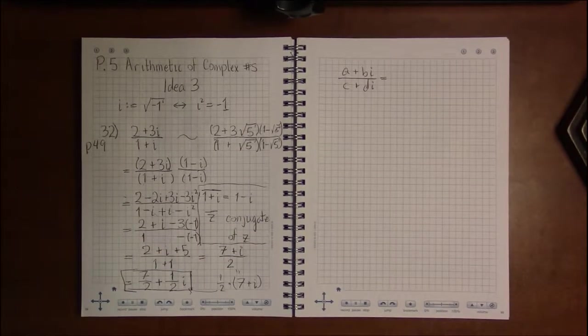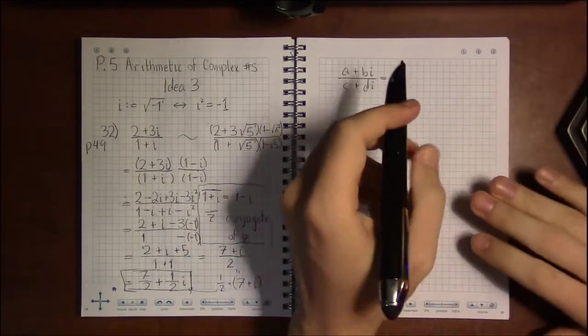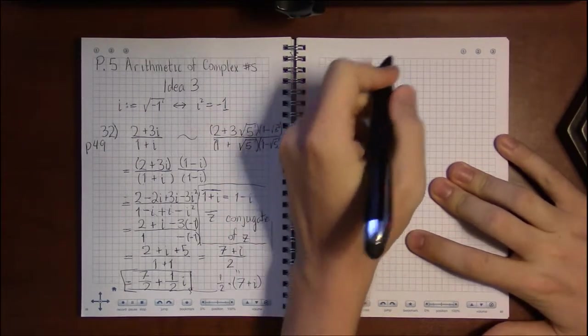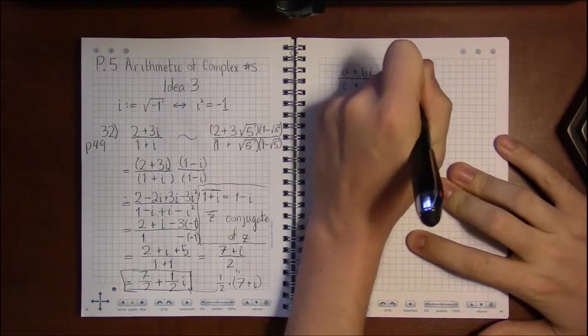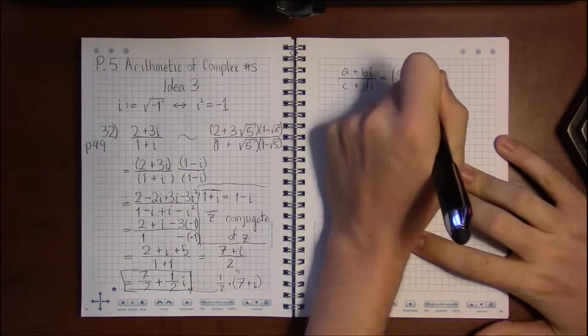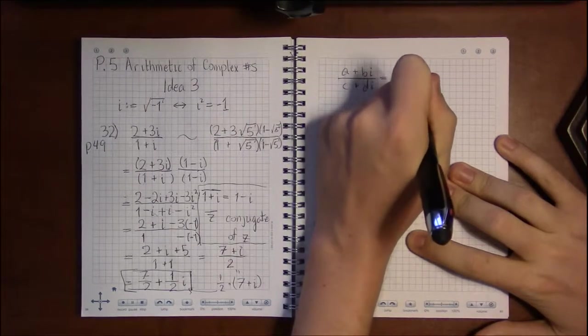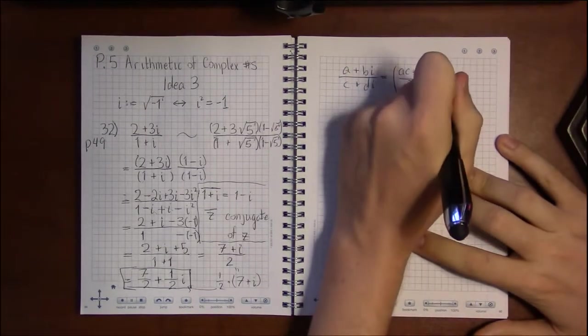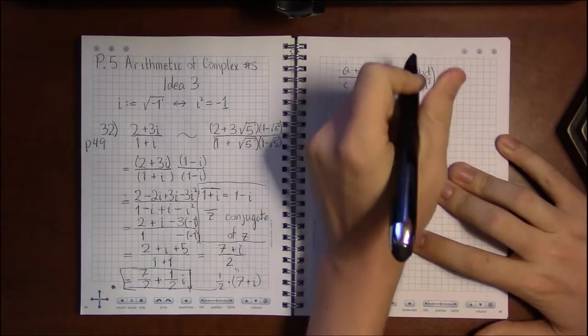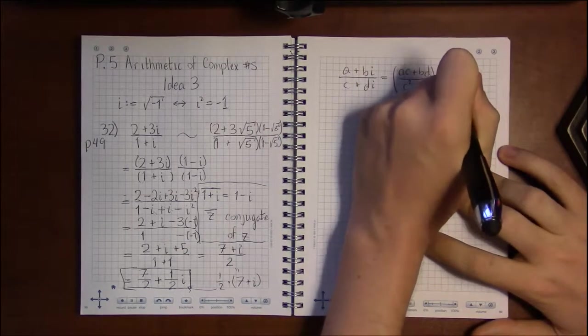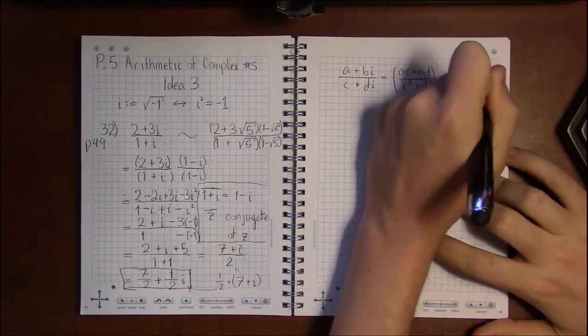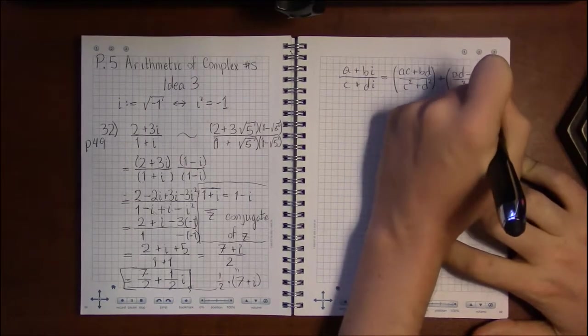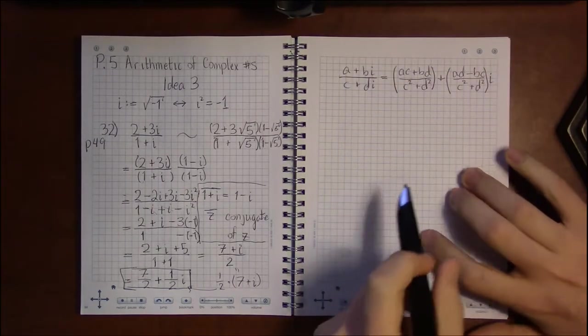Oops. Book fell off. Sorry about that. That's fine. Here's what you're going to have to memorize. You're going to do AC plus BD all over C squared plus D squared. That's your real part. Your imaginary part is going to be AD minus BC all over C squared plus D squared. And that's the imaginary part, so it has to have an i attached to it.